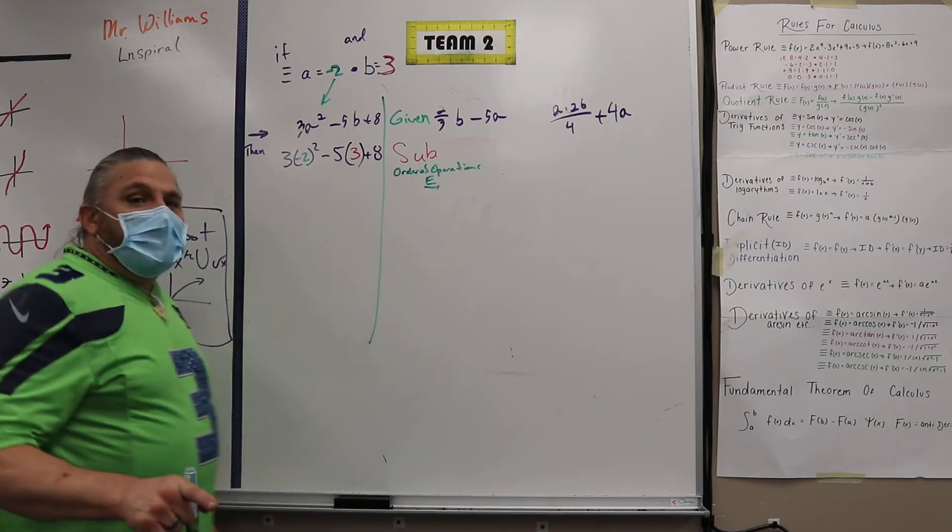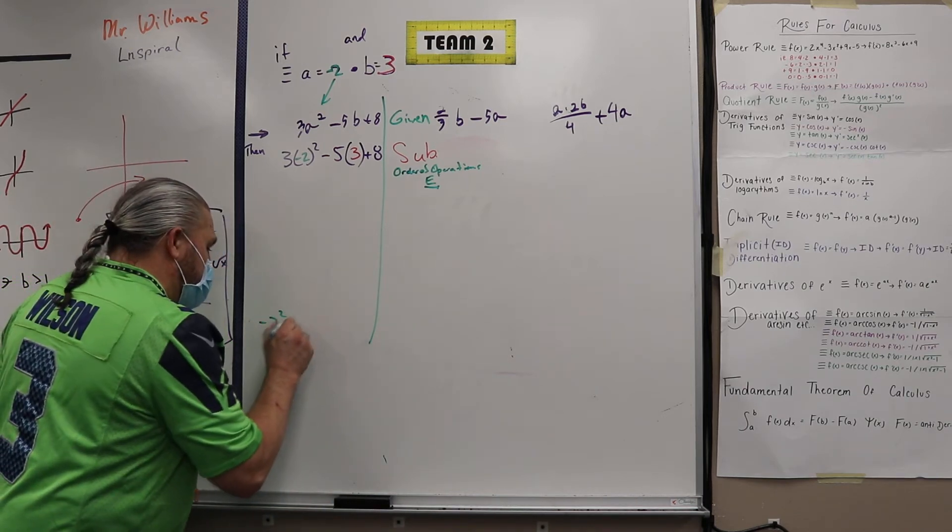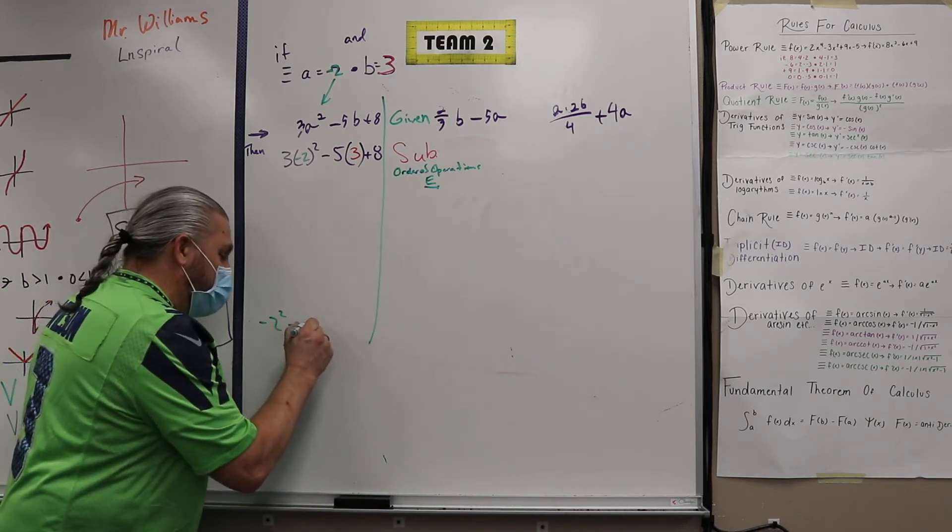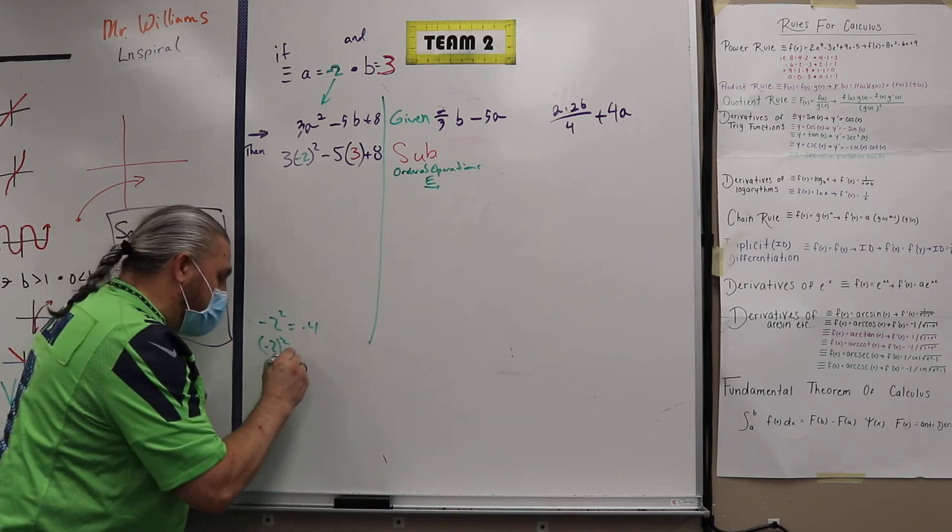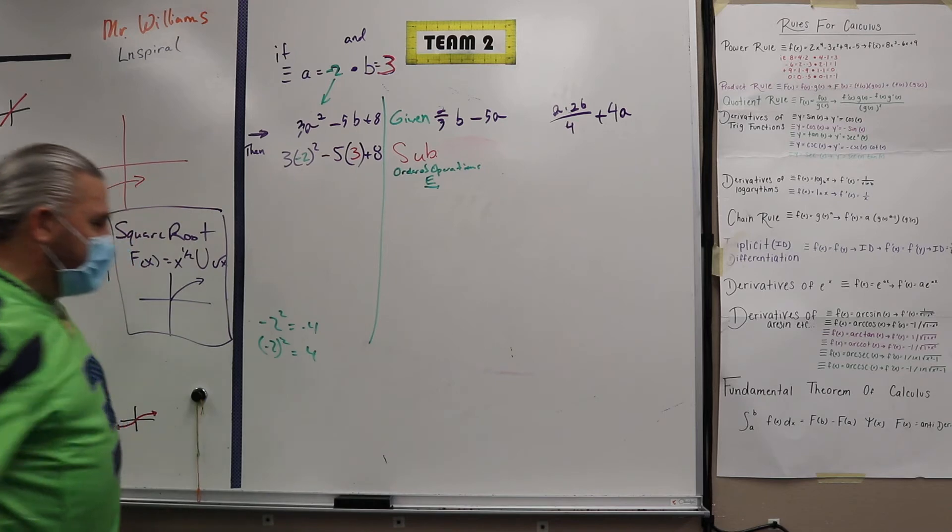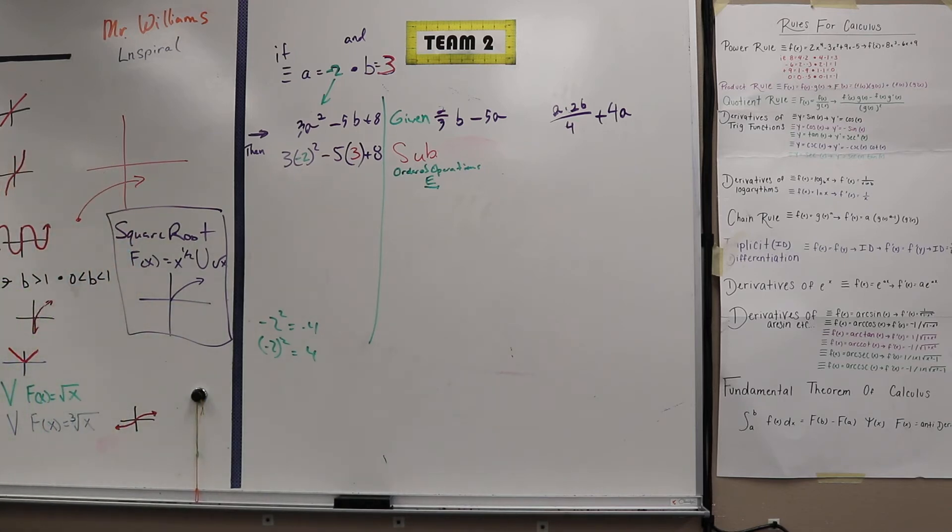Nope. Negative two squared is negative four. You're right. But negative two squared is four. Weird, huh? It's a negative times a negative.